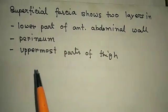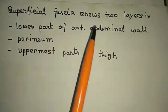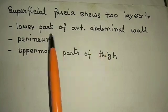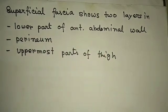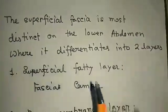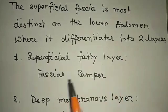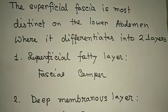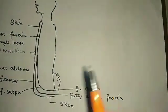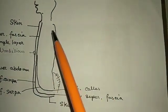Now, special arrangement of the superficial fascia: in the lower part of the abdominal wall below the umbilicus, perineum, and uppermost part of the thigh, it is converted into two layers - the superficial fatty layer known as fascia of Camper, and the deep membranous layer known as fascia of Scarpa.